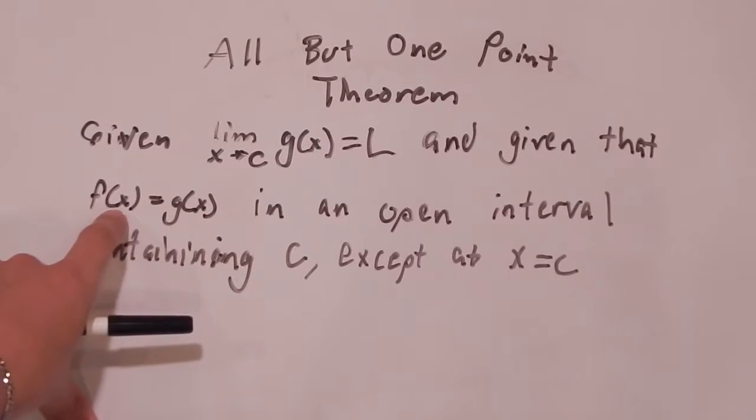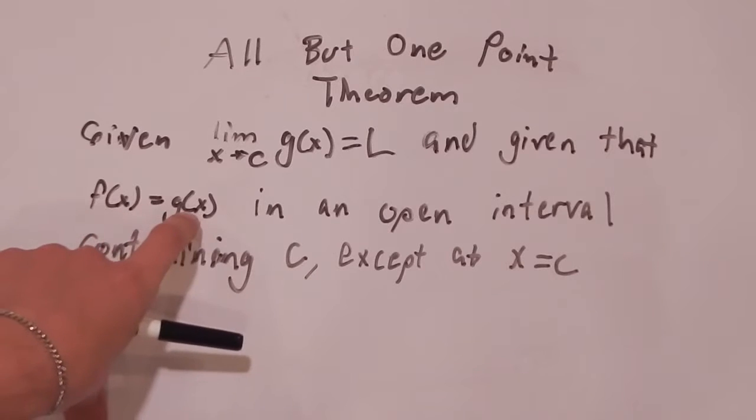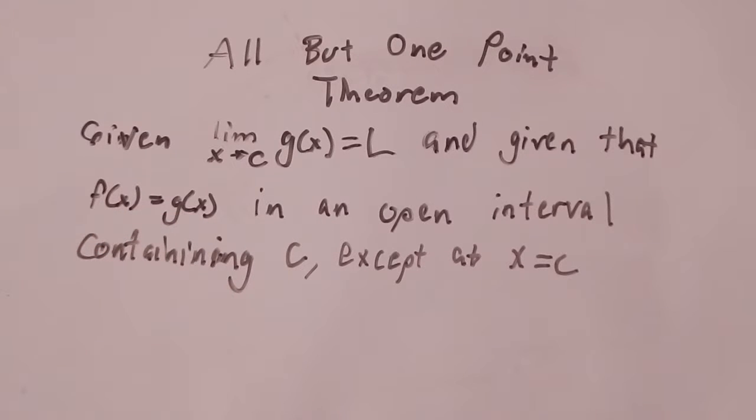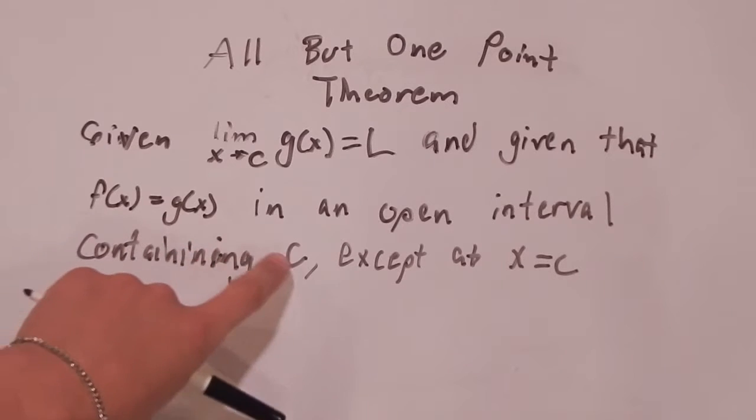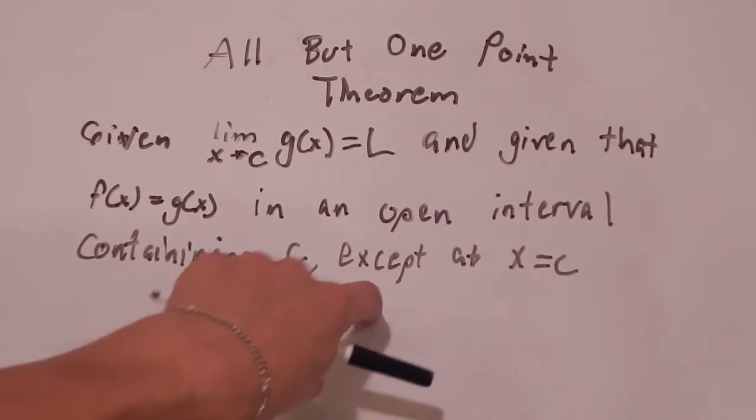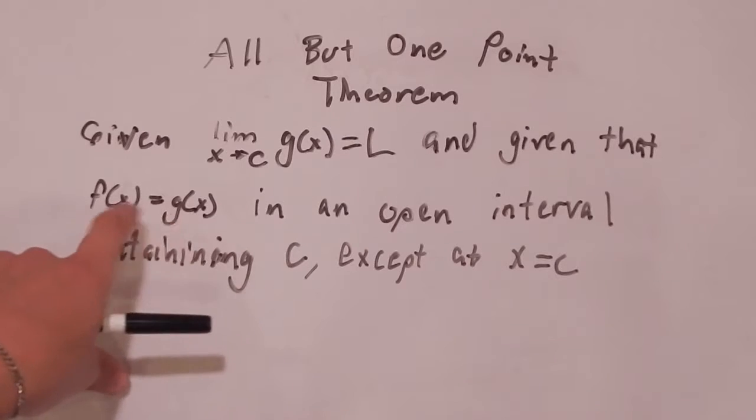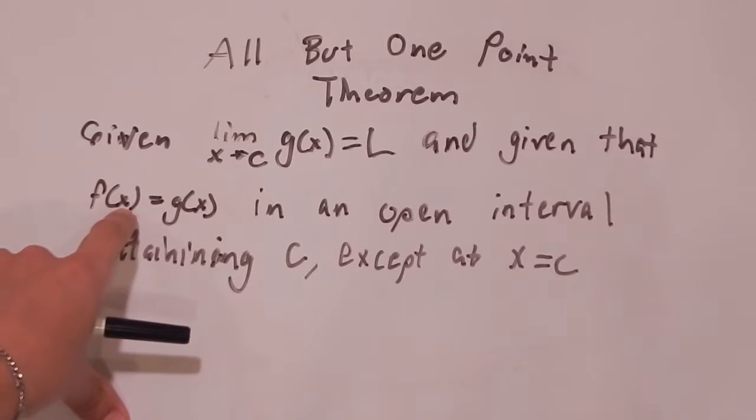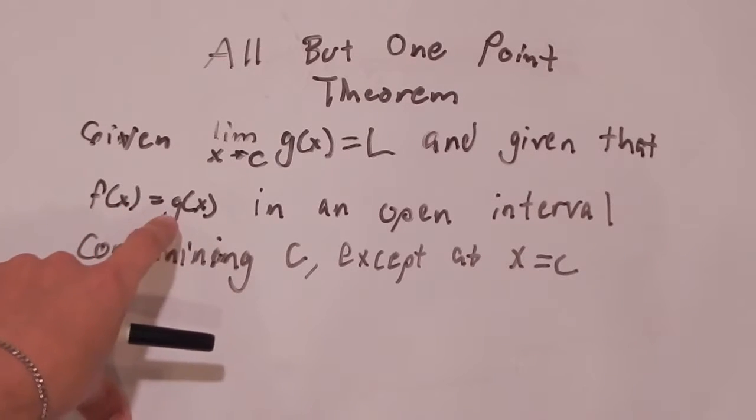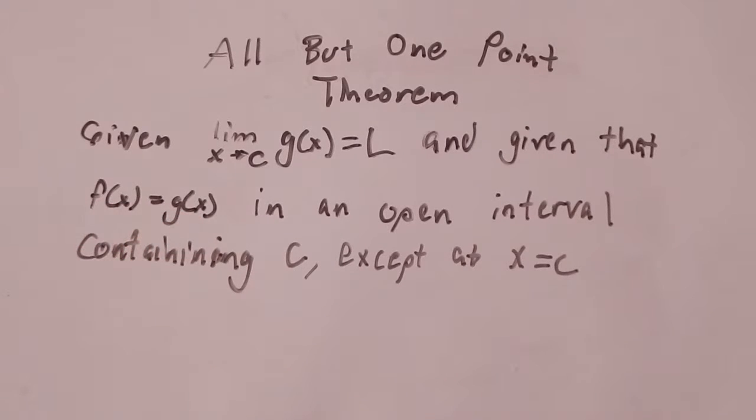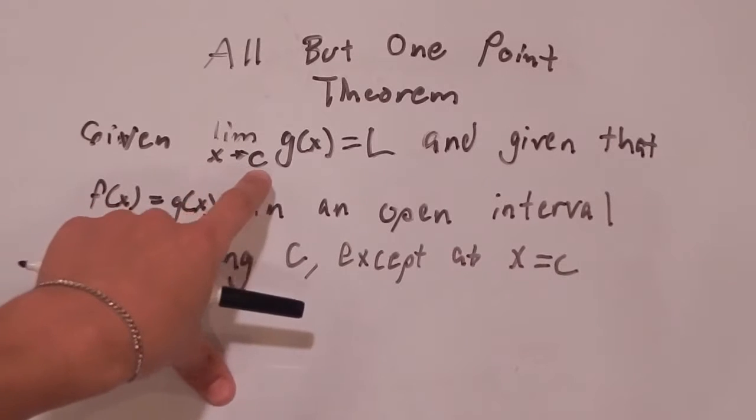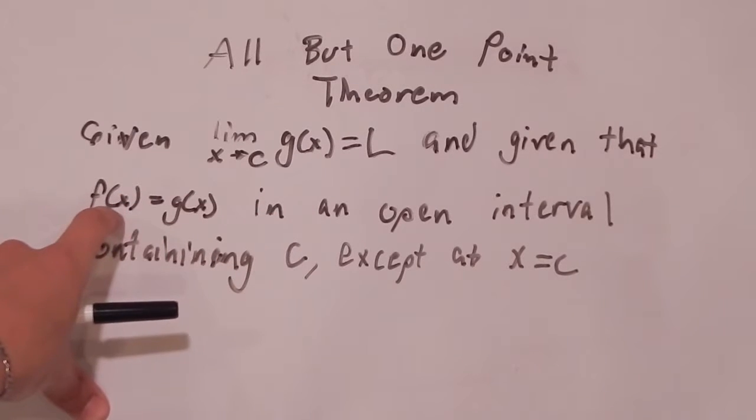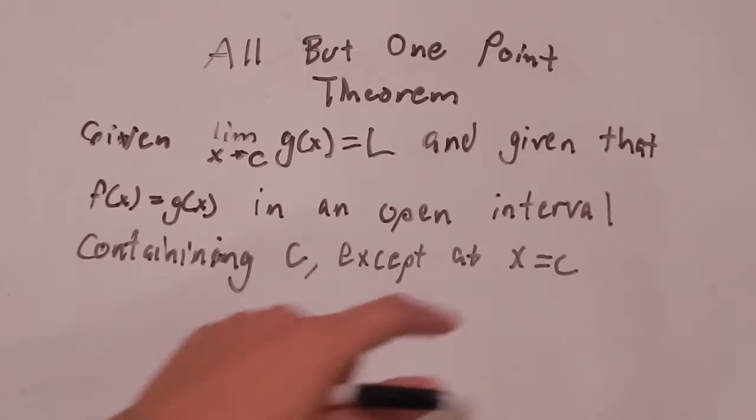And then this next part is saying that there's another function, F of X is equal to G of X. And it's equal to G of X in the open interval containing C. But at X equals C, these two are not equal. They're completely different. But as we'll see in a few minutes, that doesn't really matter. But for all the points around C, those X values around C will return F of X values that are equal to G of X values.